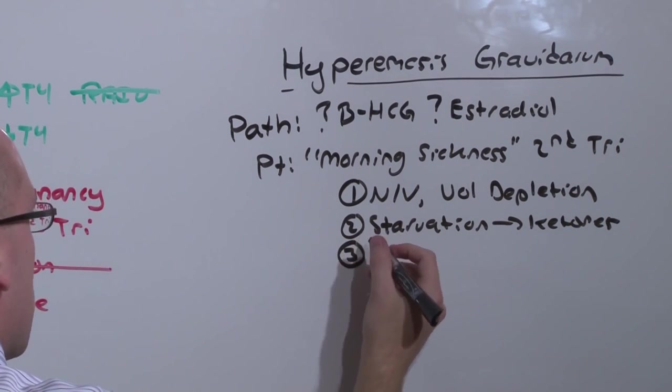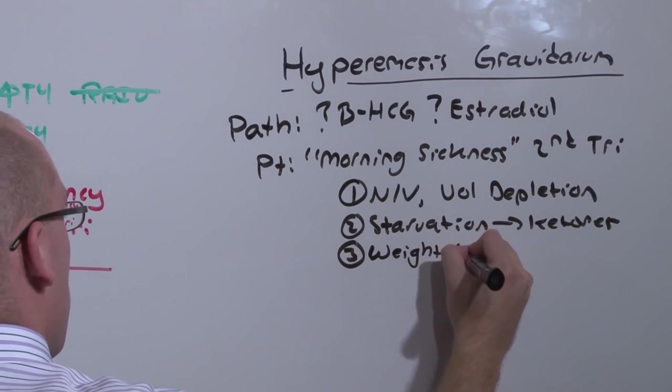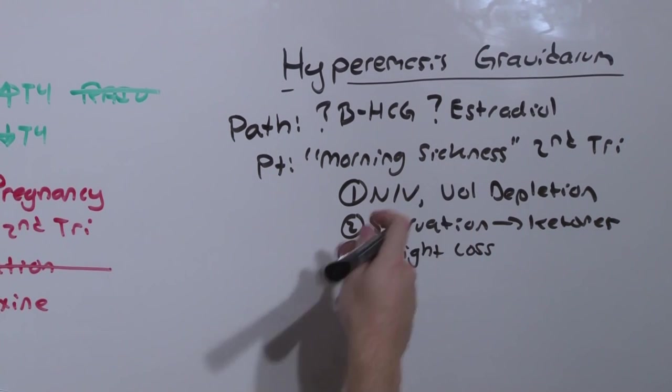Nausea and vomiting so bad that it actually causes starvation, and you'll see ketones in the blood. Nausea and vomiting so bad that it causes volume depletion, starvation, and weight loss. So this is like a really super bad morning sickness.